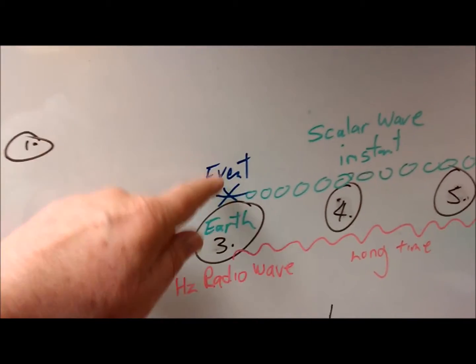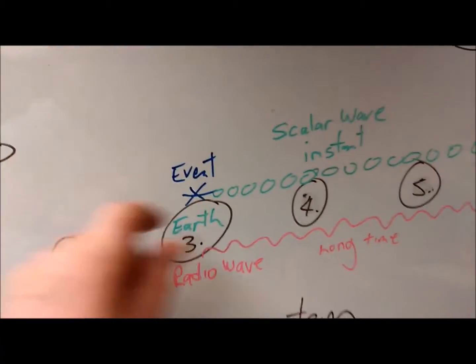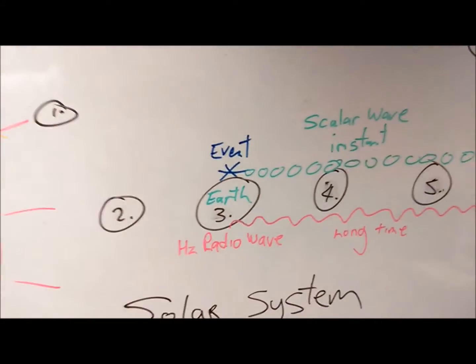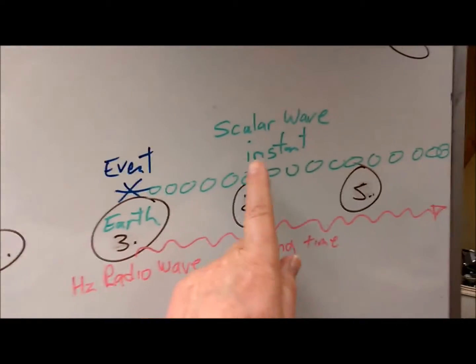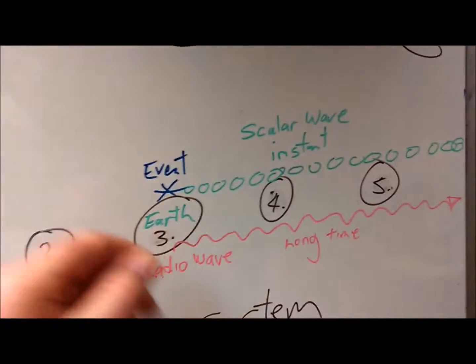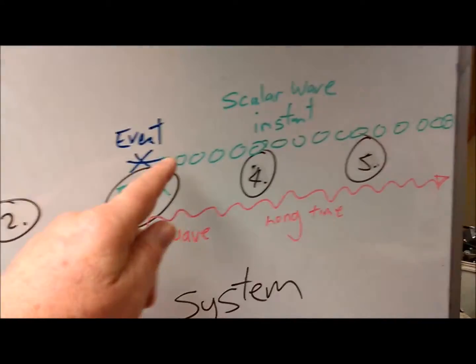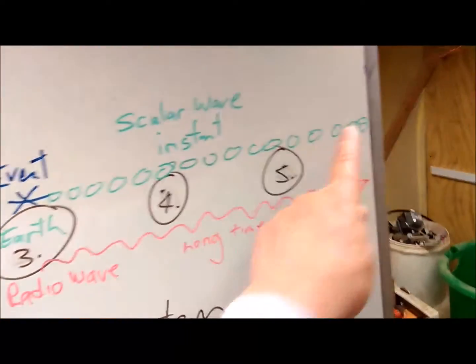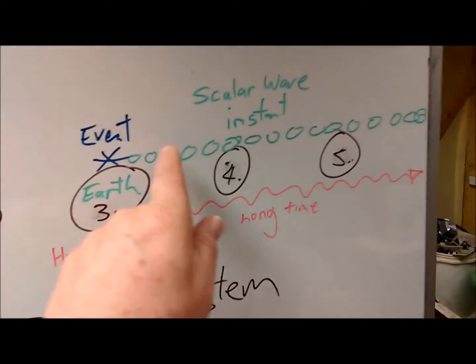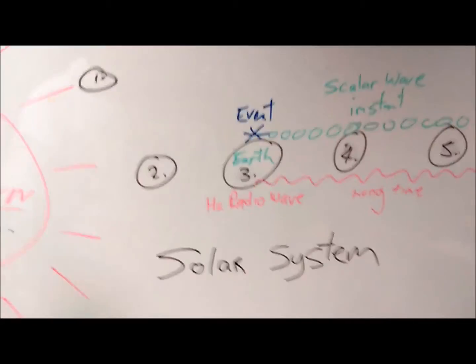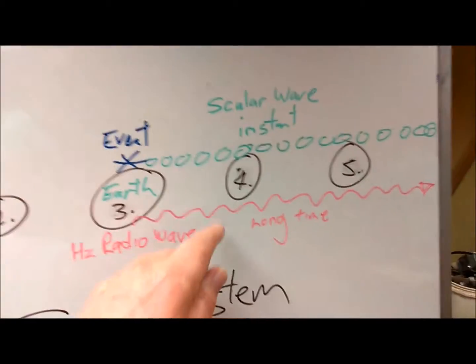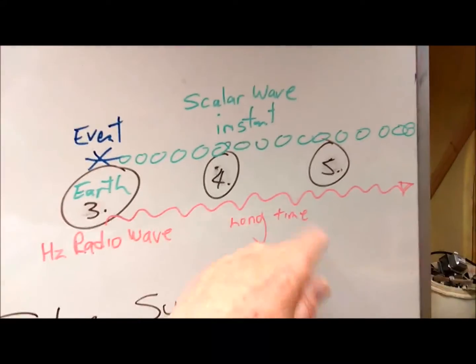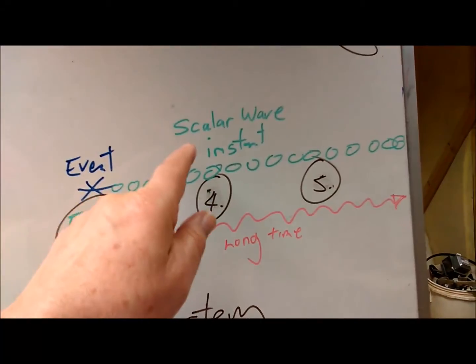A scalar event, however, is instant. So this here — from the Sun going out — is distance, and the scalar wave is instant; it can go out as far as you like, to infinity, because of all these little green circles. The word for it is ether — it's space, it's everything. That's what I'm getting my head around. So the difference between the two: the Hertzian wave takes a long time, and the scalar wave is instant.